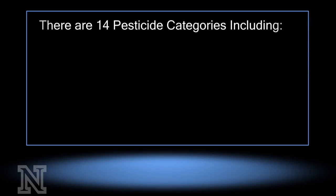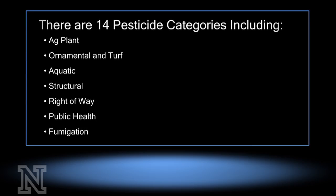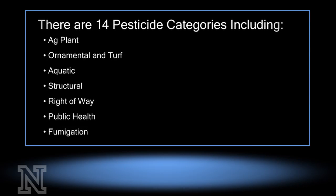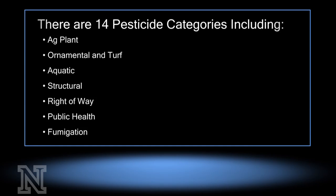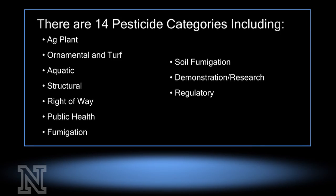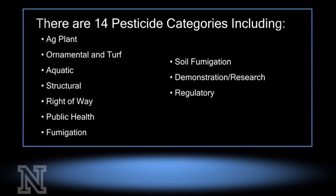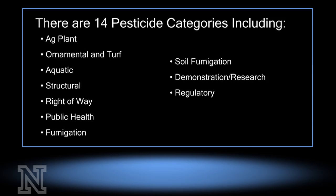There are 14 pesticide categories in Nebraska, including Ag Plant, Ornamental and Turf, Aquatic, Structural Pest, Right of Way, Public Health, and Fumigation. There are also three subcategories — soil fumigation, demonstration and research, and regulatory — that can be added to a license with parent categories such as Ag Plant, Structural, or Ornamental and Turf.